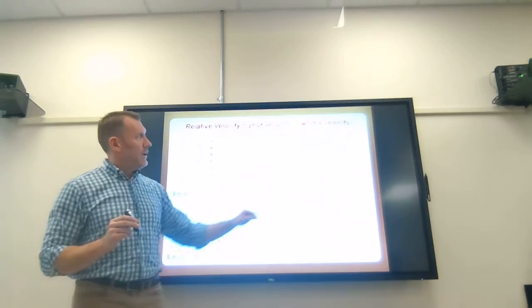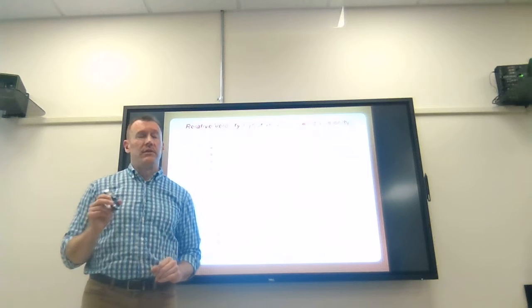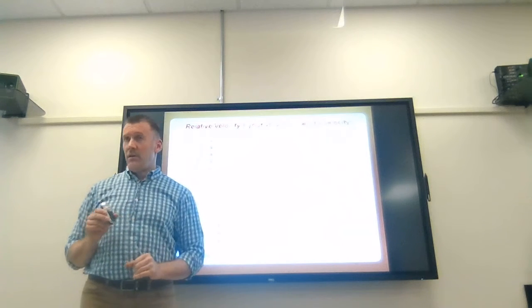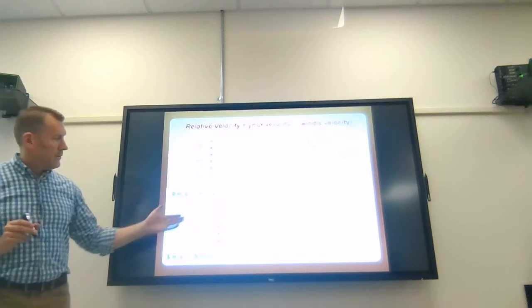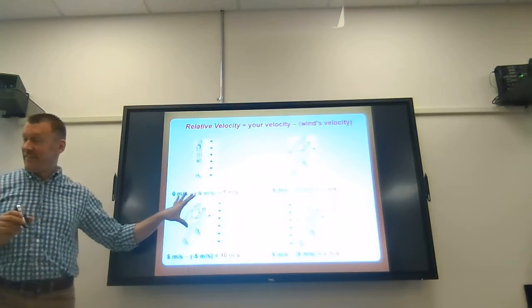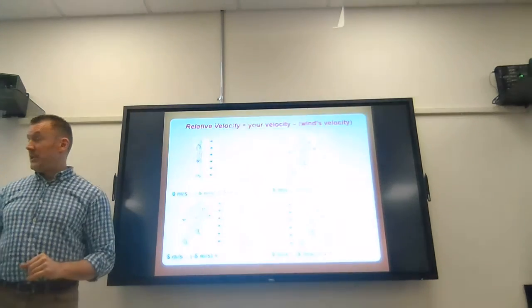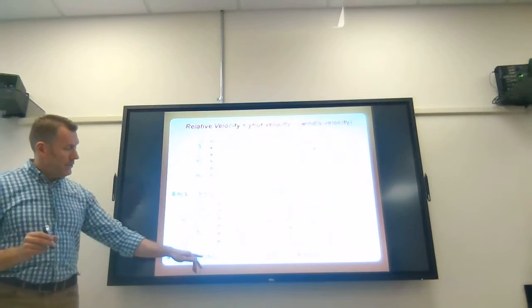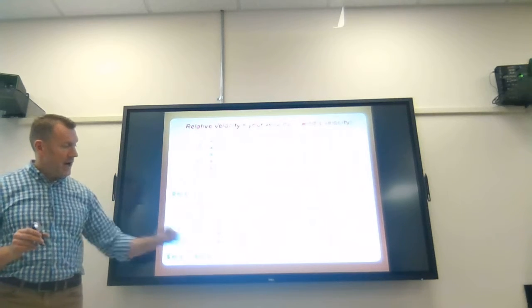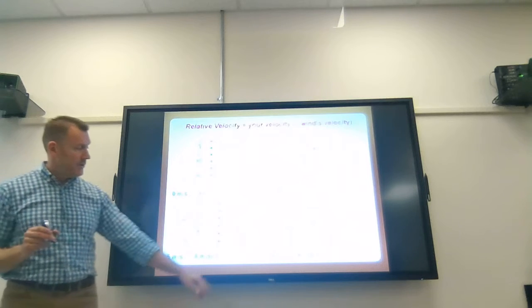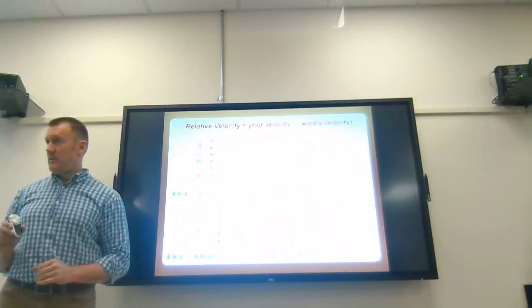If an athlete is moving through still air with no wind, the relative velocity equals the athlete's velocity — five meters per second. An athlete moving at five meters per second into a five meter per second headwind: five minus negative five equals a relative velocity of ten meters per second. That makes sense because both the athlete's motion and the headwind contribute to the relative velocity.